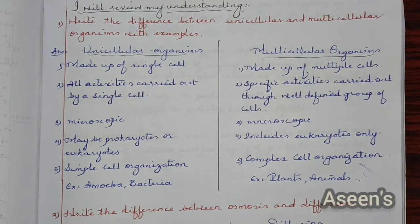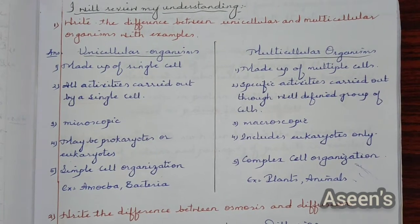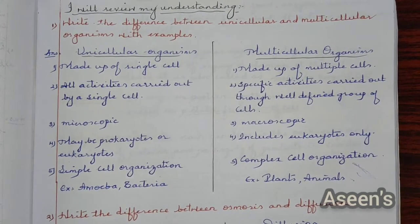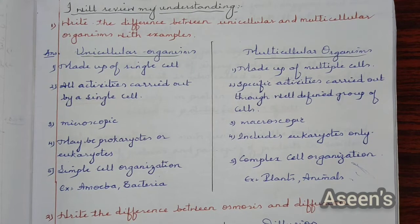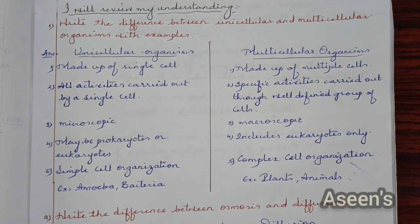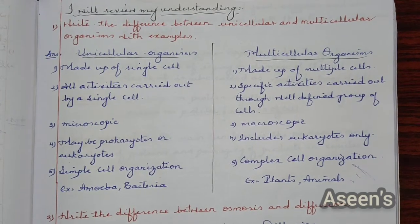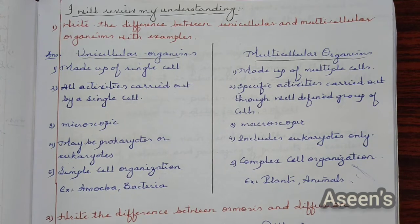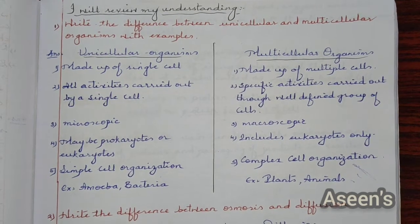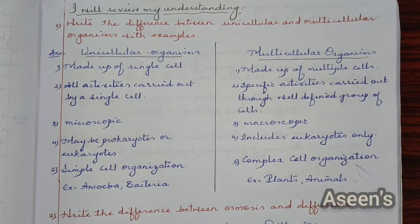The very first question: the difference between unicellular and multicellular organisms with examples. The answer along with examples is as you can see here on the screen.